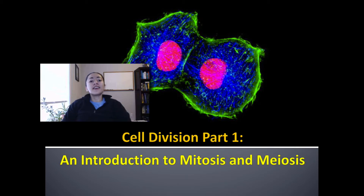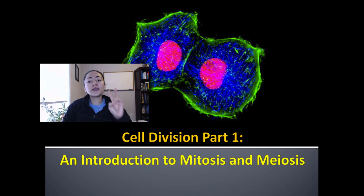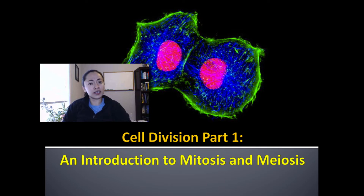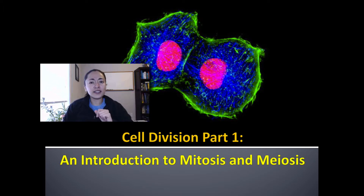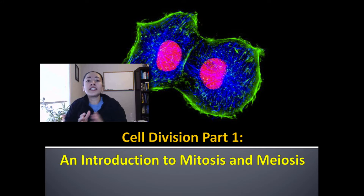In this video I'm going to introduce you to the two different types of cell division that occur in living organisms: mitosis and meiosis. I will also post other videos discussing the phases of mitosis and meiosis and how the steps in each process differ.